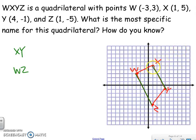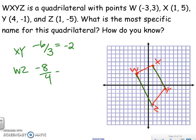For the slope of XY, I go down 6 and over 3, which simplifies to a slope of -2. For the slope of WZ, I go down 8 and over 4, which also reduces to -2. So WZ is parallel to XY. Now I need to find the slopes of the other sides to make sure it's not a parallelogram — and I can see those sides are clearly not parallel. So it is a trapezoid.